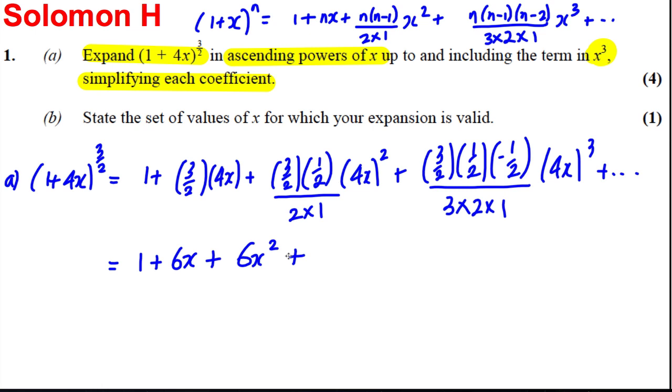So the next one would be 3/2 times a half times negative a half all over 3 × 2 × 1, and all of that times by (4x)³ which is 64x³. I would get myself actually a negative here, so this would be -4x³ plus dot dot dot.